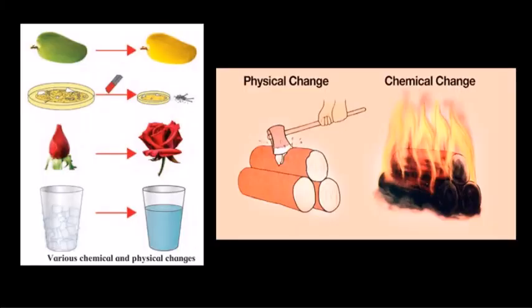To identify a physical change in a substance, we look for whether the shape, size, or state of the substance has changed, whether the change is temporary, and whether it is reversible. To identify a chemical change, we look for whether a new substance is formed, whether the change is permanent and non-reversible. These parameters help us determine whether a physical or chemical change is occurring in a substance.